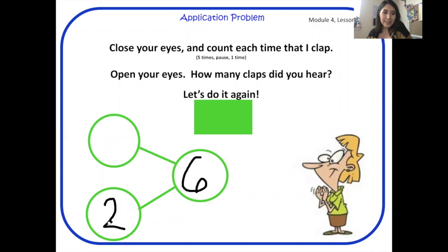Close your eyes. Keep them closed. Hold that number in your brain. Hold that number in your brain. Open your eyes. Six. How many times did I clap?